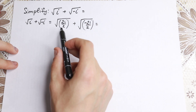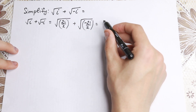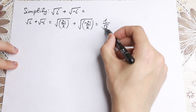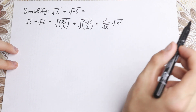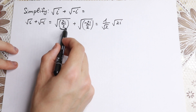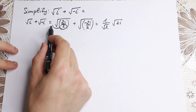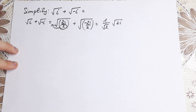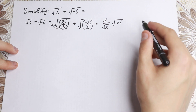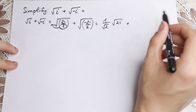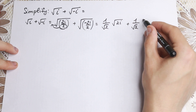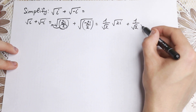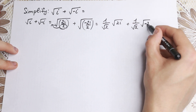Now we can easily write 1 over square root of 2 out in front of this square root. Inside we still have 2i. We just take the 2 out from under the square root sign, so we need to write it as a square — and we still have 2i inside. The same applies to the second element, which becomes 1 over square root of 2 times the square root of minus 2i.